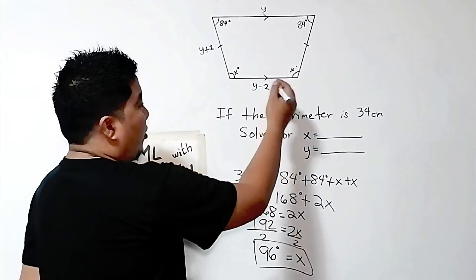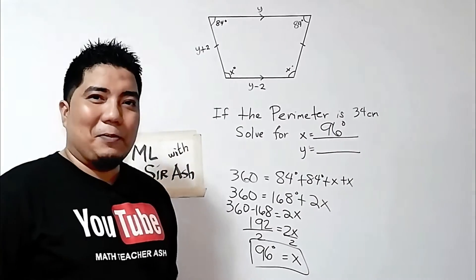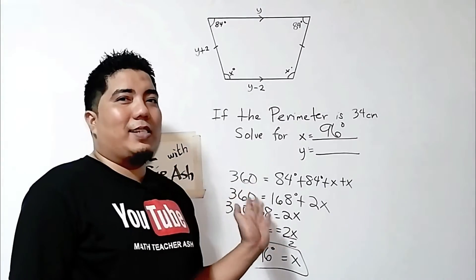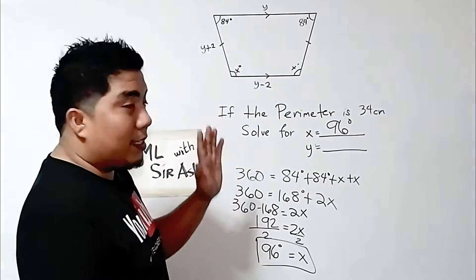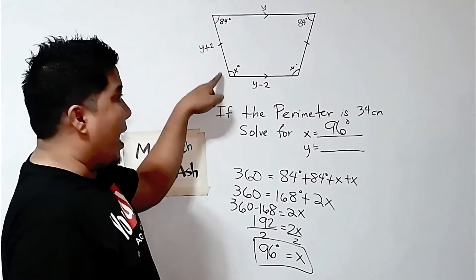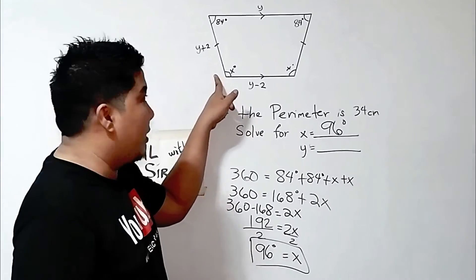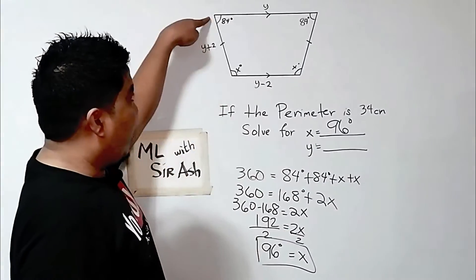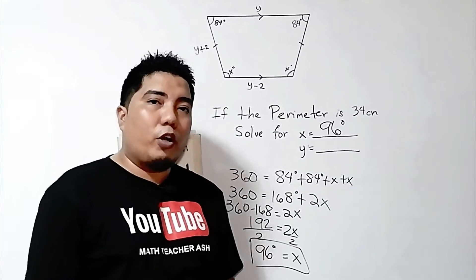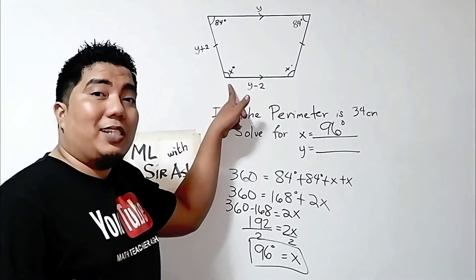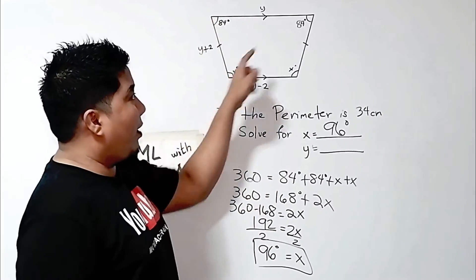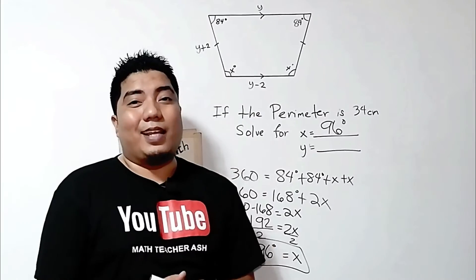So therefore, the measurement of x is 96 degrees. Easy, right? Now, I will also give you a quick tip. You don't need to use the 360 degrees method. If you have this kind of trapezoid, one base angle and another base angle from the other base are supplementary with each other, meaning their total measurement is 180 degrees. So if you have 84 and ask yourself what is needed to become 180, the answer is 96.